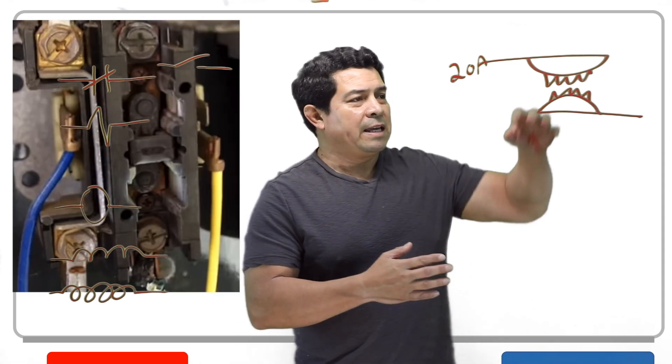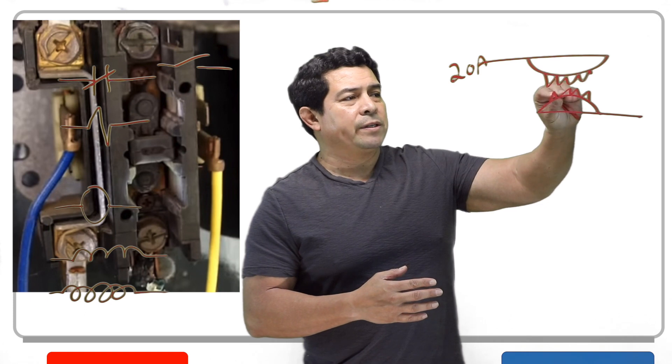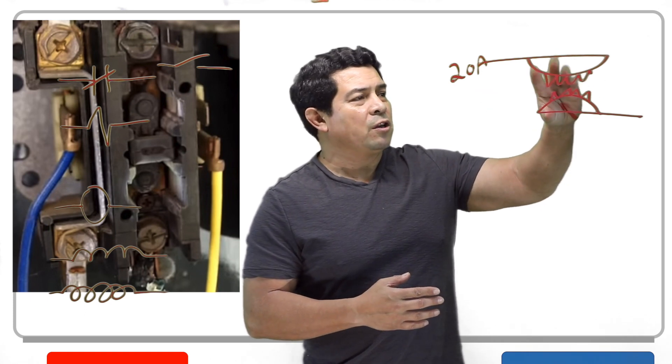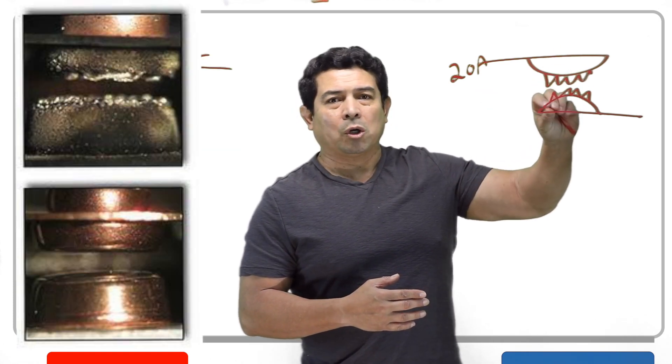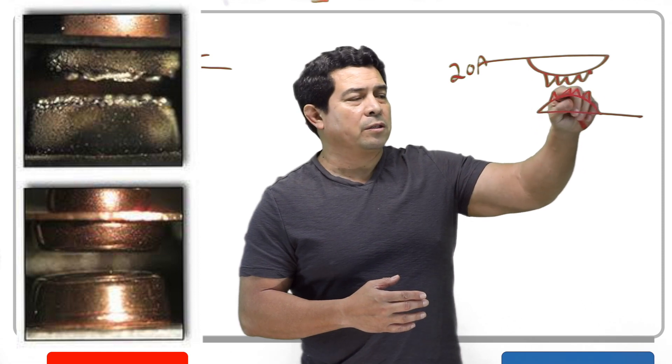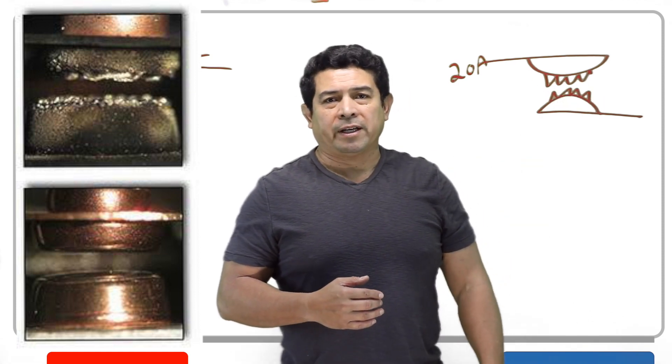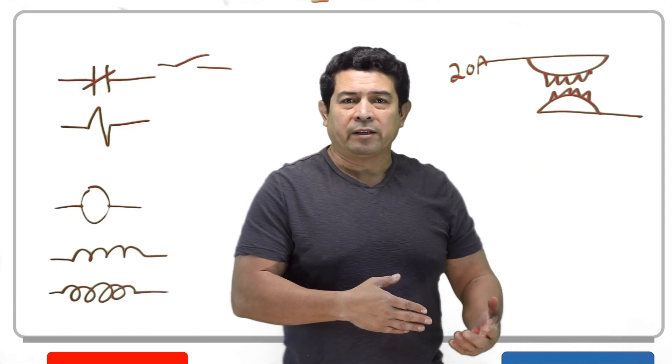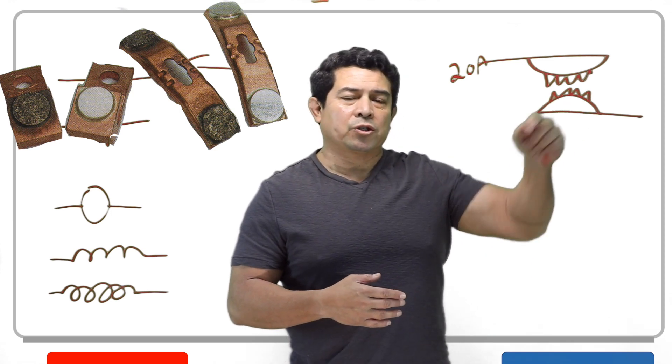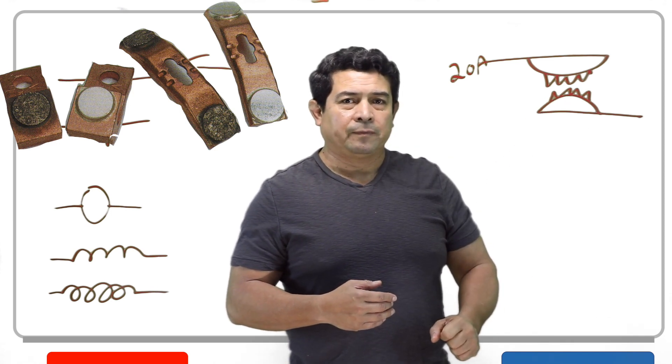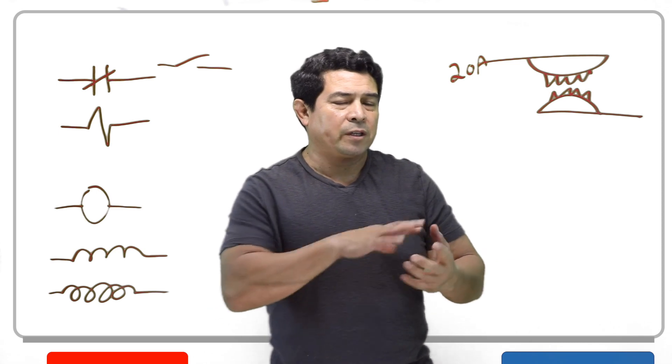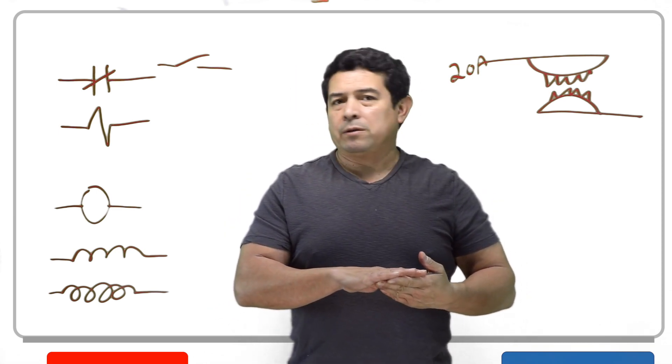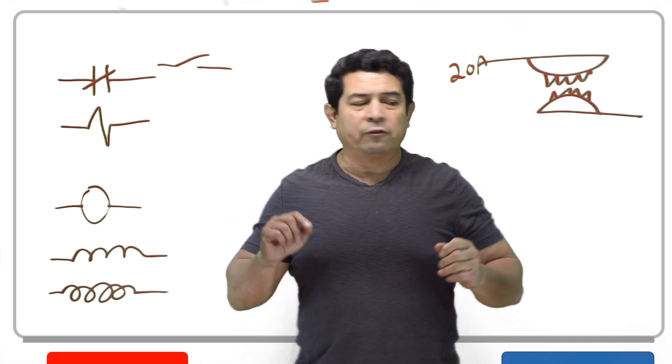So I want you to understand this because the older the contactor is or the higher the amperage, the more that this is going to arc. The more arcs, the more pitting you're going to have. The more pitting you have, the more restriction to flow that you have. Now, by looking at it, you can tell that it's pitted. But how do you know that it's actually restricting the flow?